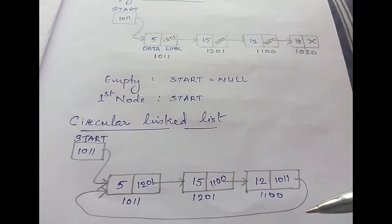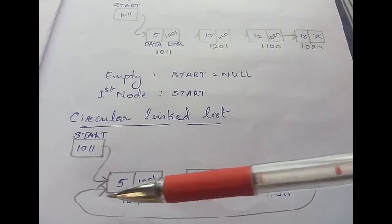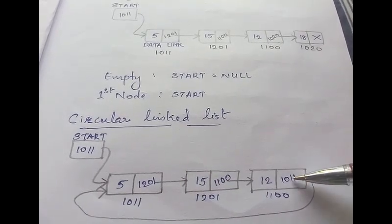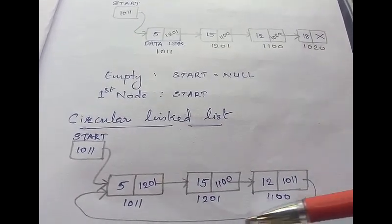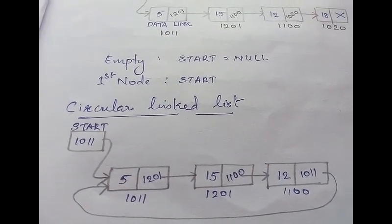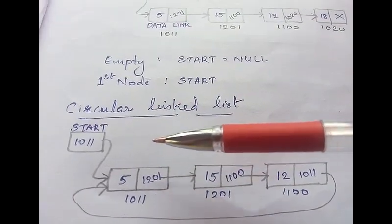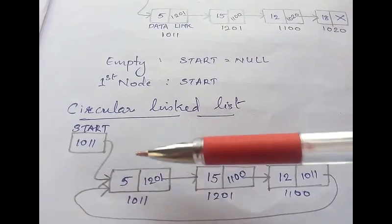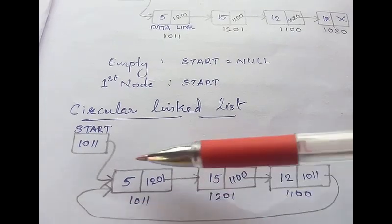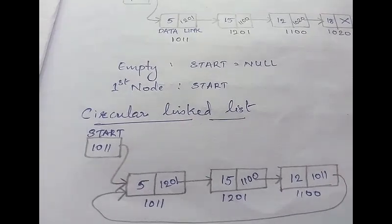The last node points to the first node by storing the first node's address in its link part. Here the address of the first node is 1011, so that address is stored in the last node, making the list circular. An empty circular list means start equals null. The first node is start itself, and the difference is that the link part of the last node will contain the address of the first element, which is start.